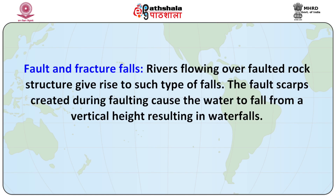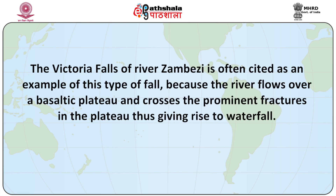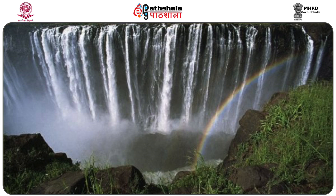Fault and fracture falls: rivers flowing over faulted rock structures give rise to such types of falls. The fault scarps created during faulting cause the water to fall from a vertical height, resulting in waterfalls. The Victoria Falls of the river Zambezi is often cited as an example of this type, because the river flows over a basaltic plateau and crosses prominent fractures in the plateau, thus giving rise to a waterfall. The picture shows the Victoria Falls.